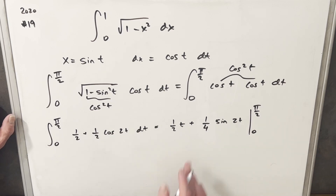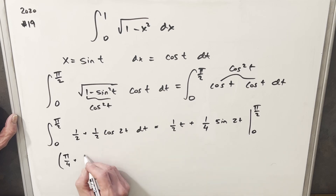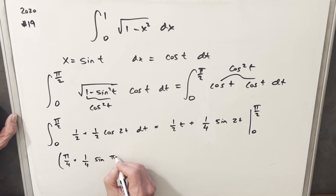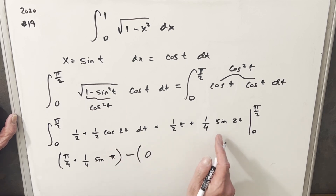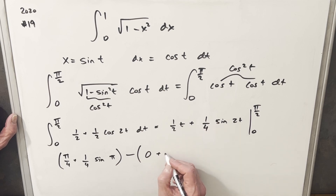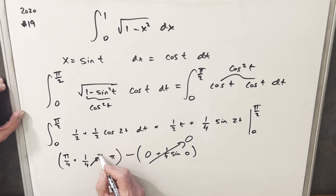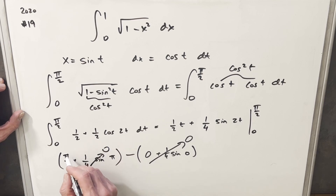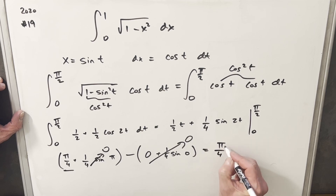Evaluating these bounds: plugging in pi over 2, we get pi over 4, plus 1/4 sine of pi — since pi over 2 times 2 is pi. Then plugging in 0, that term is just 0, and 1/4 sine of 0 is also 0. Sine of pi is also 0, so everything cleans up nicely. All we have left is pi over 4, which is our final answer.